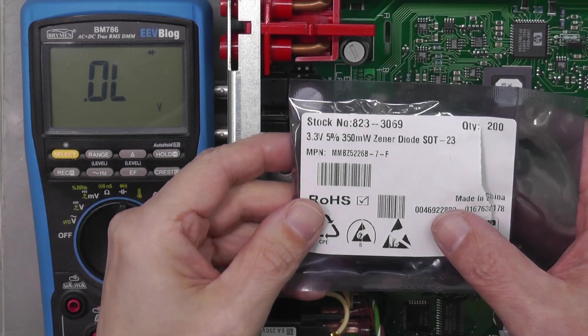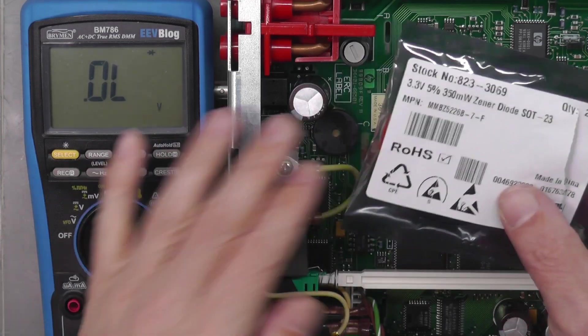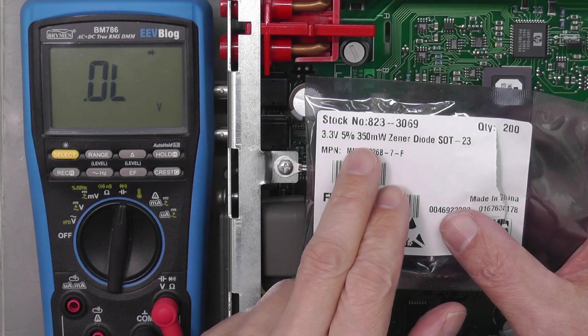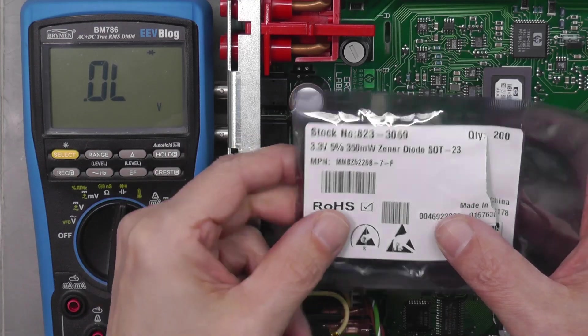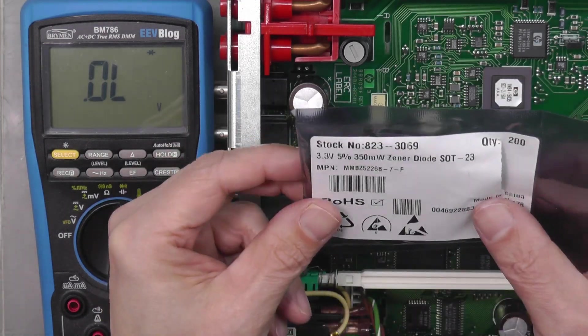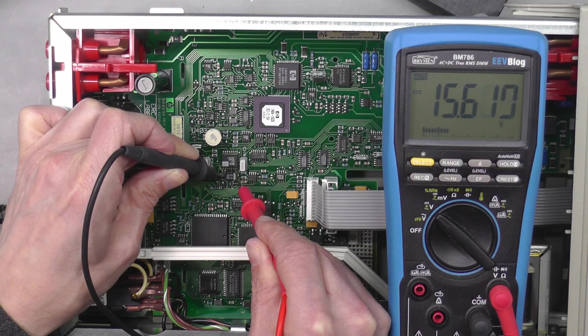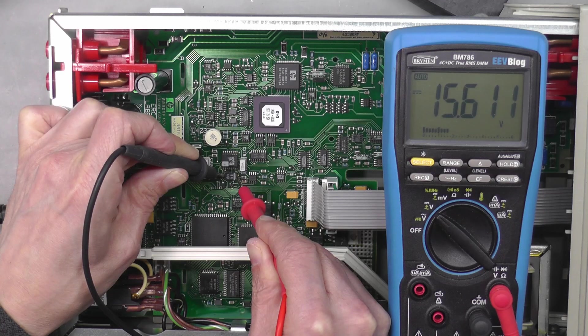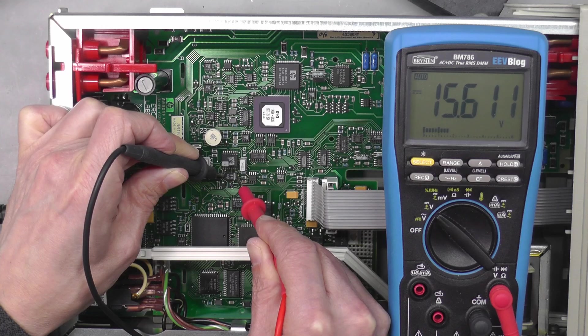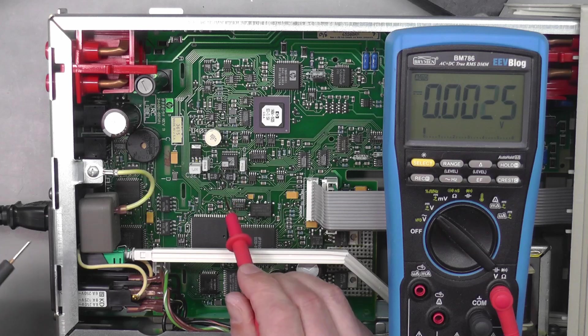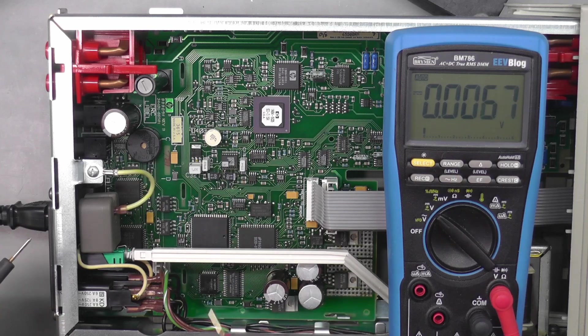Excellent, I do have some stock. The original diode on the board was 350 milliwatt, and that's exactly what I've got in stock here. Let me just fit one of these to the board and we'll try it out. 15.6 volts, perfect. So the tantalum capacitor gone and the associated zener diode with it, perfect.